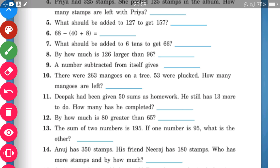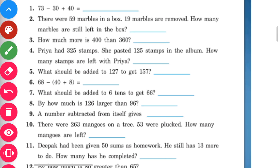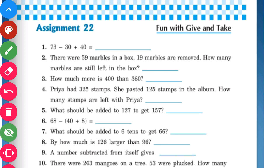Our next question says: there were 59 marbles in a box. 19 marbles are removed. How many marbles are still left in the box? So that box contains 59 marbles, and out of those, 19 marbles are removed. We need to find how many are still left.